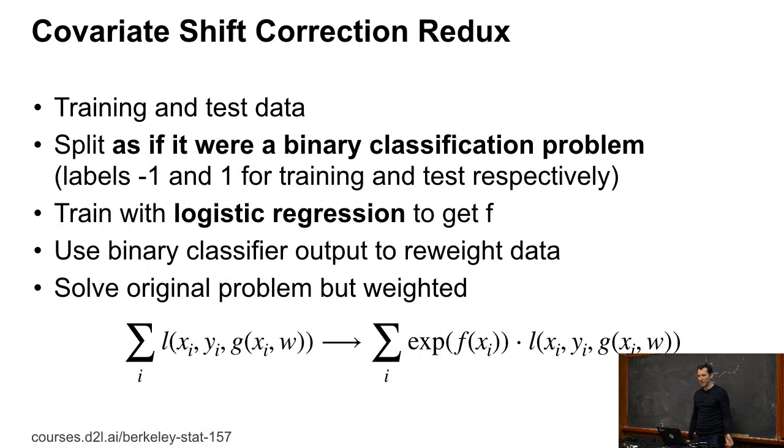So in sum, what I then do is I take, once I have those weights, I take the training data, I train this binary classifier, and then now I have my weighted data, so I can weigh by e to the f of x_i, and I now use this to weigh my training data to solve the problem I really should have done.